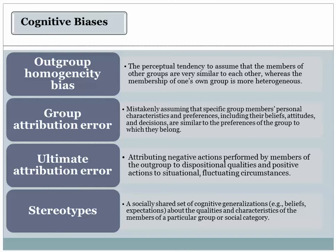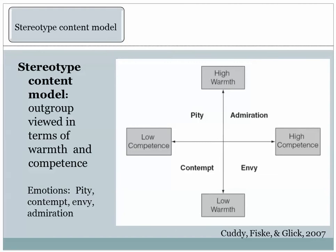Of all the cognitive biases, stereotyping — the tendency to make broad, sweeping generalizations about members of other groups — is probably the most pervasive. We assume that all members of the out-group share certain characteristics in common, and even when we gather evidence that suggests these stereotypes are incorrect, we still tend to cling to these mistaken beliefs. The very concept of stereotype, as first coined by the journalist Walter Lippmann, suggests that these cognitive structures tend to stamp themselves upon the evidence we gather and so constantly reaffirm themselves.